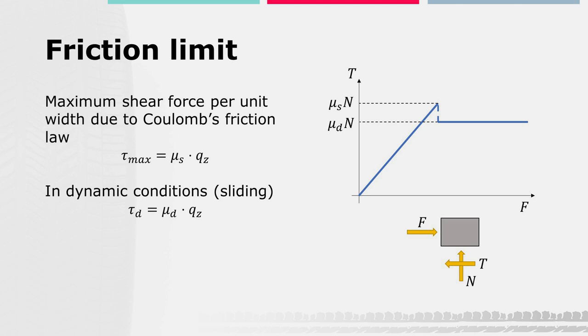According to Coulomb, when the contact point has a sliding velocity, the shear stress becomes equal to the dynamic friction coefficient μd by the normal pressure qz. The shear stress in the contact patch is thus smaller than the static friction shear stress when sticking, and equal to μd by qz when sliding.